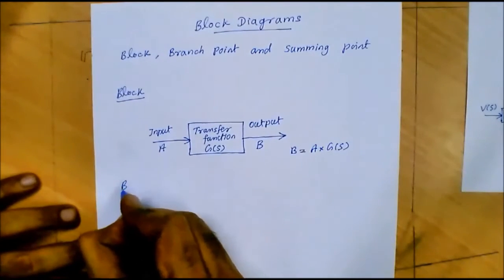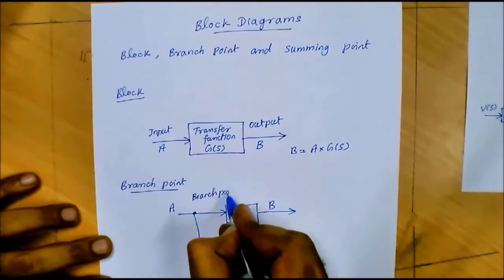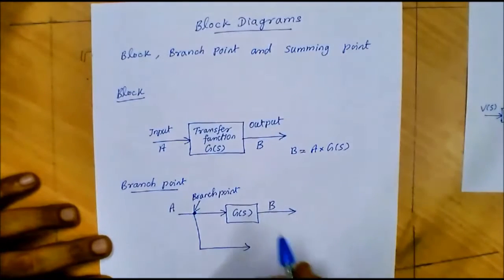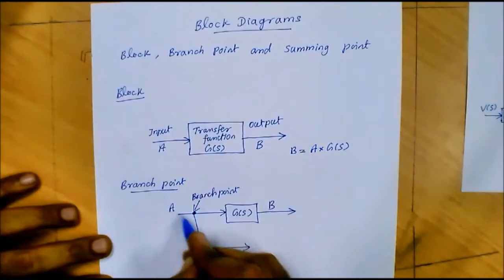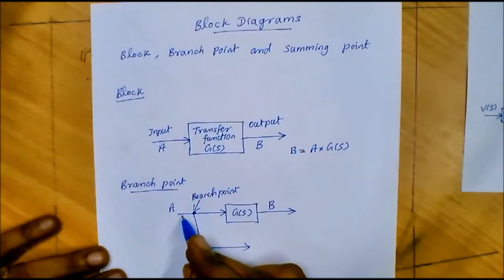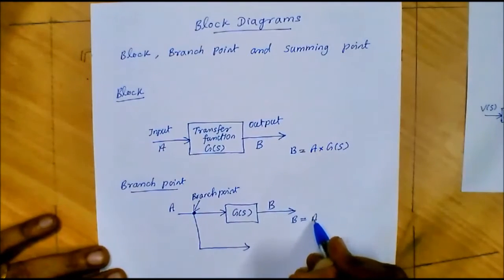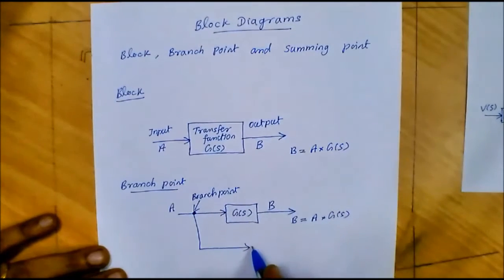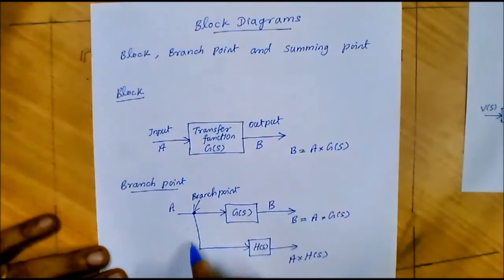Now let us consider the branch point. The branch point is one from which the signal goes to more than one block. Here the signal A goes to G, and similarly it can go to many other blocks. For example, if we have another block H, the output from that branch would be A into H. So from the branch point, the signal can go to more than one block.